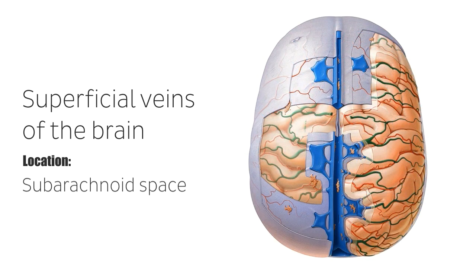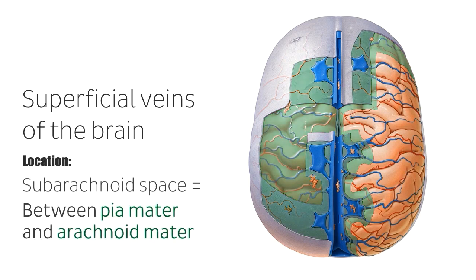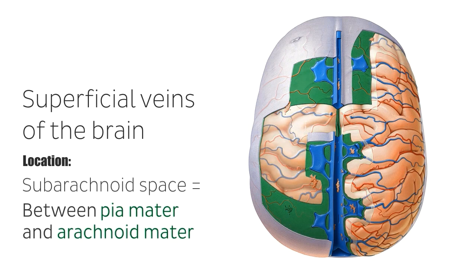In this cranial view of the brain, you can see the superior cerebral veins running between the pia mater, which itself is running over the surface of the cerebrum, and the arachnoid mater, which is the layer lying superficial to the pia mater.